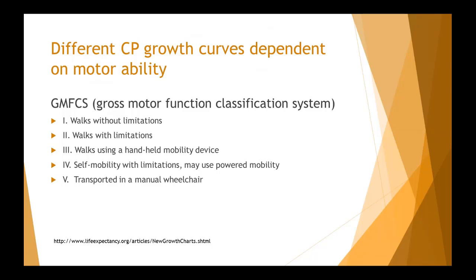There are different cerebral palsy growth curves depending on the motor ability of the condition. The gross motor function classification system is classified in five ways, and there are growth curves associated with each motor function classification.